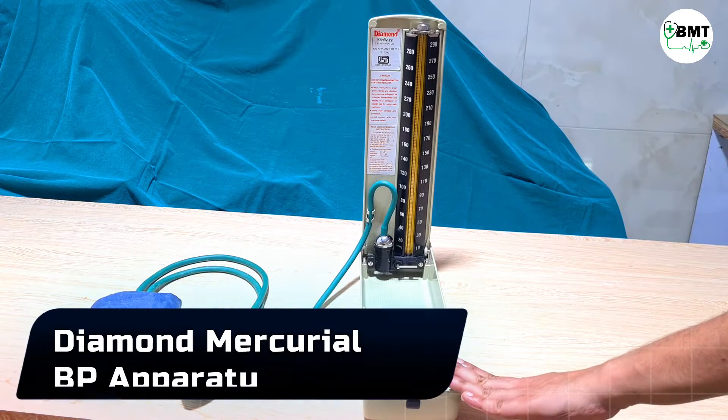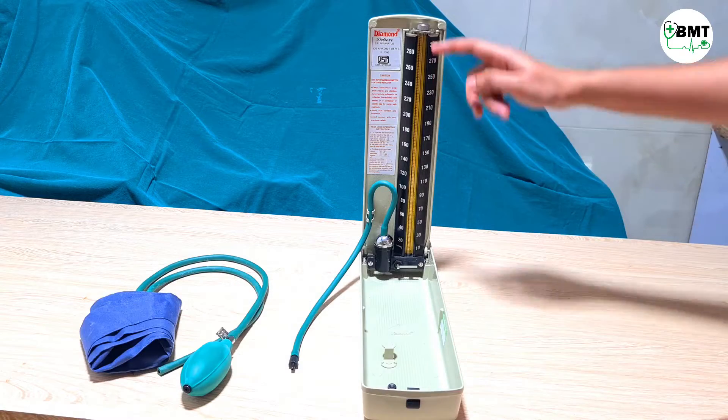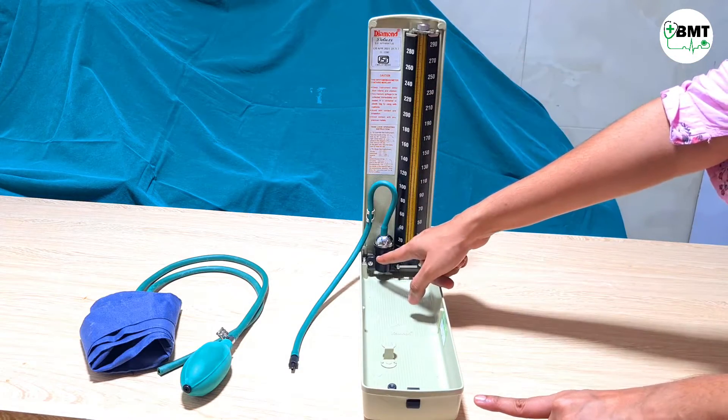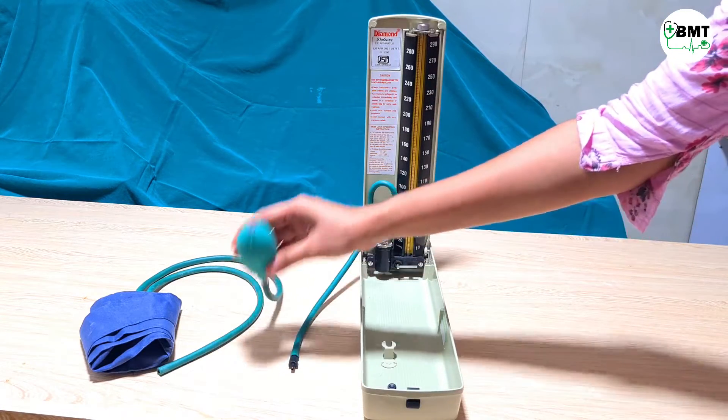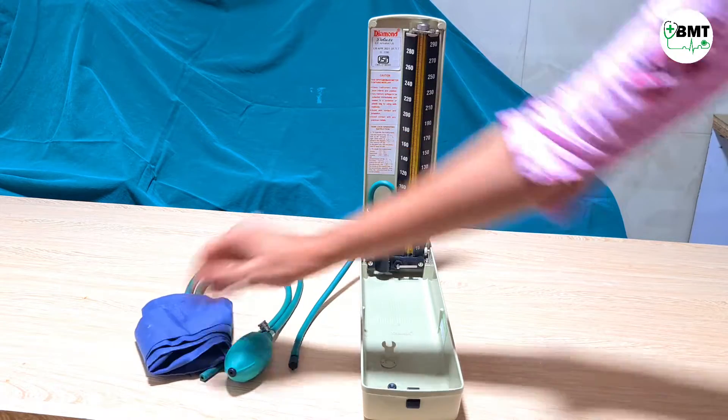This is a diamond BP apparatus which contains mercury. This is the frame, then this is the tube. This contains mercury. This is the bulb and this is the BP cuff which contains a BP bladder.